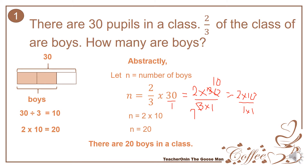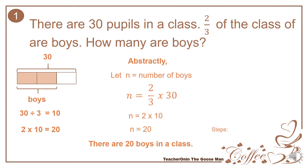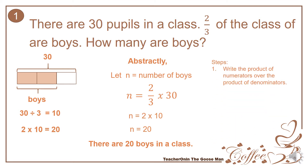To summarize the steps in multiplying fractions: first, write the product of the numerators over the product of the denominators; then reduce by removing the greatest common factor between the numerators and denominators.